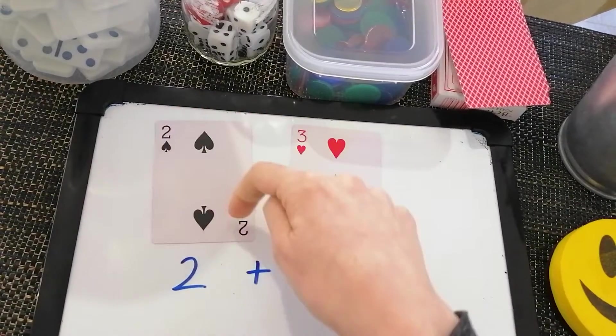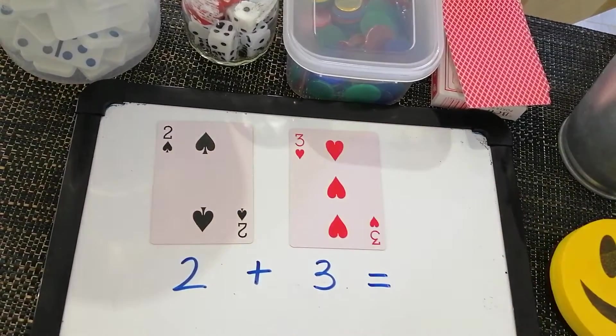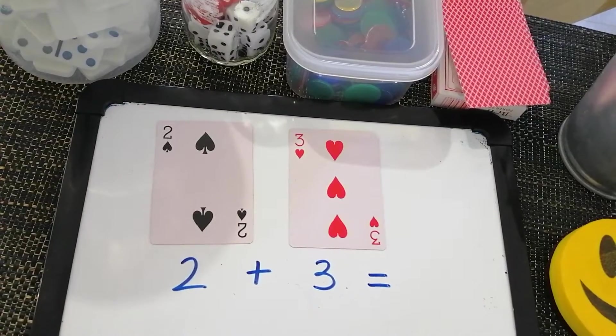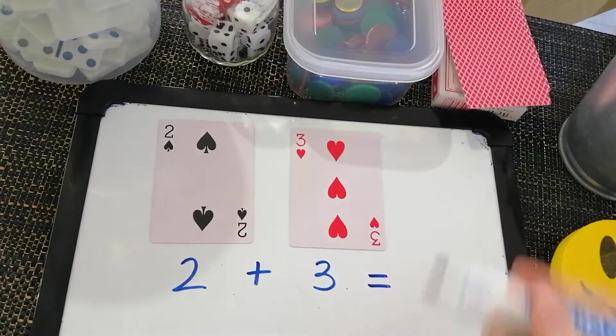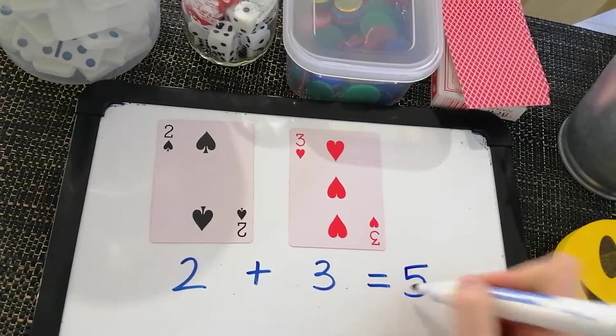So I'm not going to count these ones in the corners. Those tell me how many are on the card. So I can go one, two, three, four, five. Two plus three equals five.